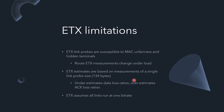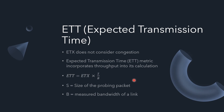This is where Expected Transmission Time, or ETT, comes in. ETX does not consider congestion — when many packets are sent simultaneously. ETT considers congestion because it calculates the time required to send a transmission; under congestion, this time increases. ETT is calculated as: Expected Transmission Count multiplied by the size of the probing packet S, divided by the measured bandwidth B of the link. Larger bandwidth means less transmission time; larger packet size means more time.